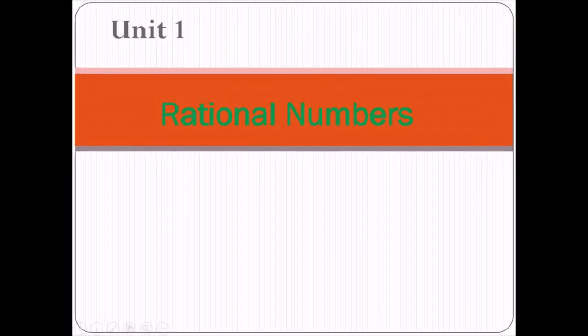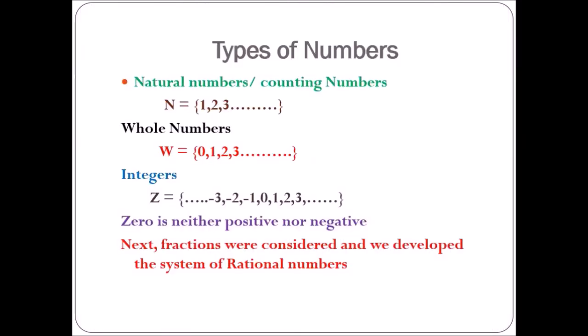Today we are going to start the first unit: rational numbers. In lower classes you have already studied different types of numbers. We know that early men started the use of numbers with counting, and hence we have the set of natural numbers, or counting numbers, denoted by capital N.